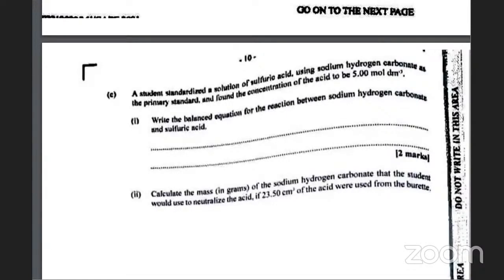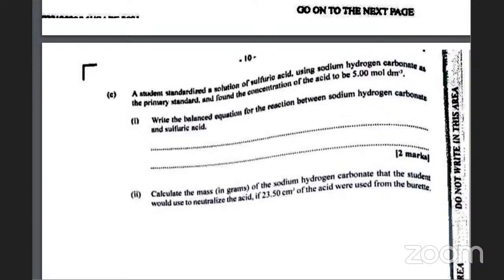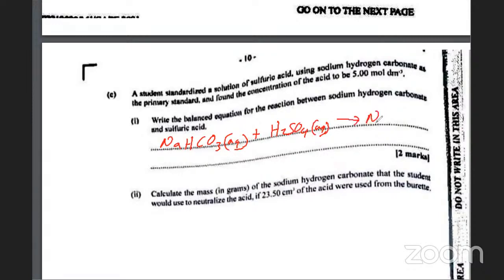This is from 2021. The organic question for 2021 was previously worked and uploaded on the channel. A student standardized a solution of sulfuric acid using sodium hydrogen carbonate as the primary standard and found the concentration of the acid to be 0.5 moles per dm³.